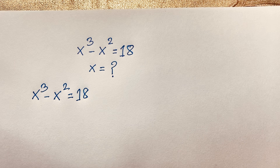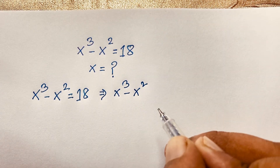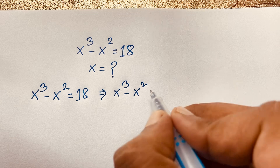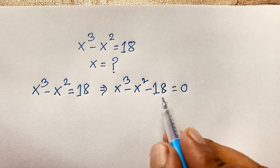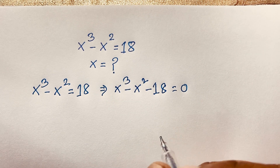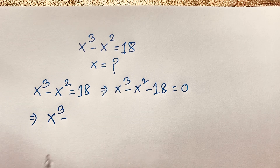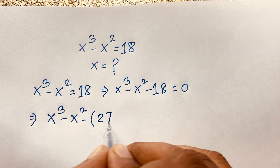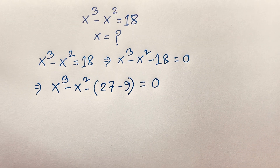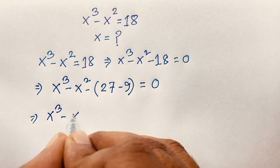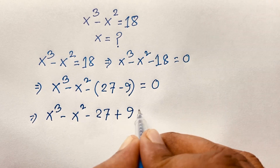Now, here is x cubed minus x squared. If I move 18 to this side, it will be negative, so x cubed minus x squared minus 18 is equal to 0. I subtract 18 from both sides. Now, 18 can be written as 27 minus 9. So it will be x cubed minus x squared minus 27 plus 9 is equal to 0. Note that 27 minus 9 equals 18.